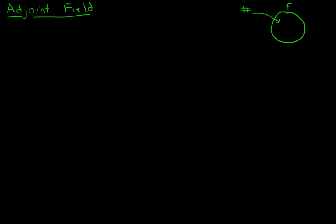So let's see what I mean by this. Let's say instead of F, let's say we have the rationals, Q. And instead of some number, let's say we have the square root of 2. That's clearly not a rational number, so it's not already in this set. So we want to take the rationals and throw in the square root of 2, as well as anything else we might need to keep this a field. The notation for this would be Q, and then in parentheses we would have the square root of 2. And this is read: Q adjoin the square root of 2.